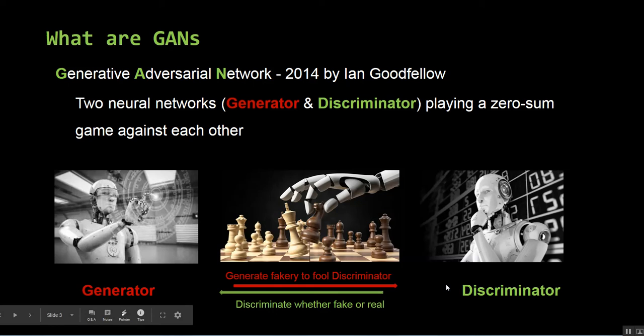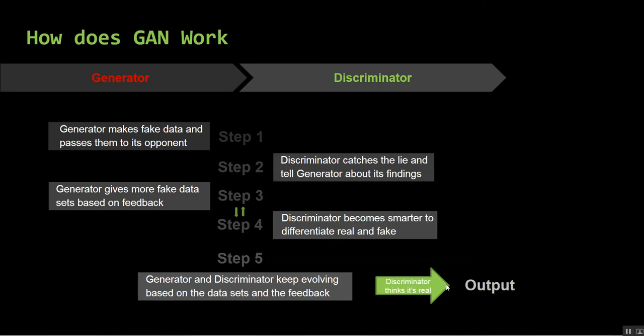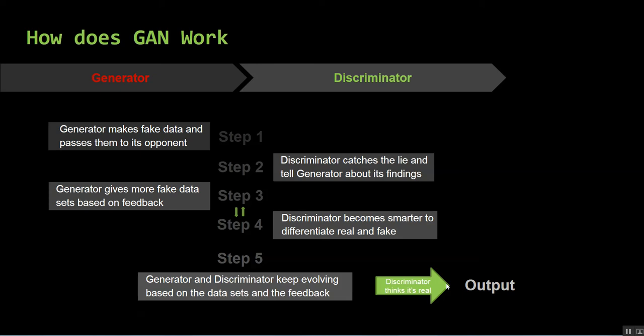Suppose you want to train a model that generates people's faces. The generator will try to create fake images, and the discriminator will try to identify if the data is real or fake. We can understand this concept as a generative model being like a thief who is trying to produce fake currency and use it without detection, while the discriminative model is like a cop who is trying to detect the counterfeit currency. Competition in this game drives both teams to improve their methods until the counterfeits are indistinguishable from the genuine articles.